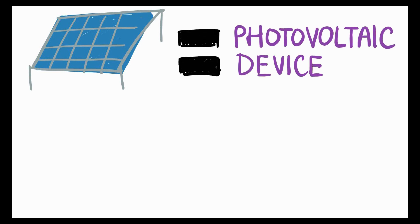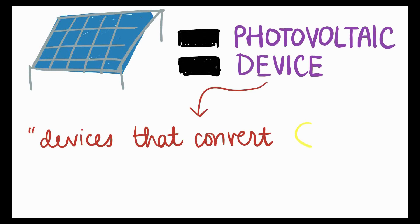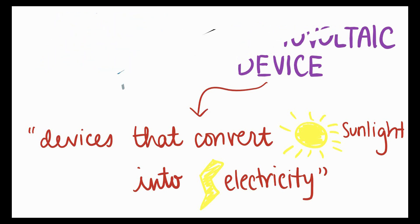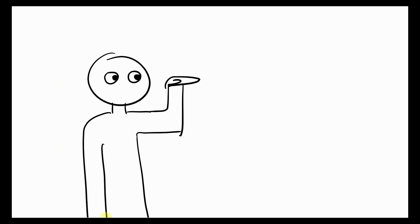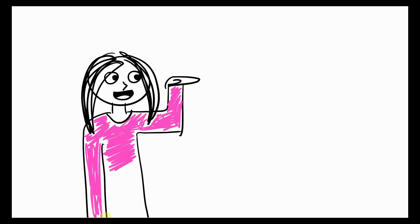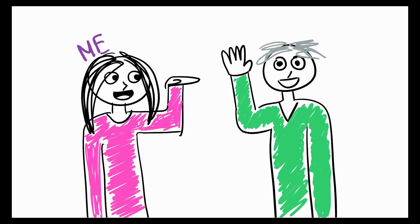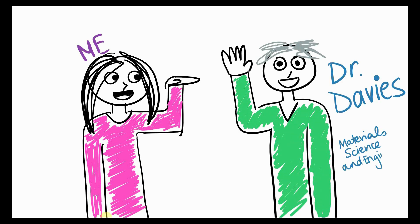Photovoltaic devices are defined as those devices that convert sunlight into electricity. Devices that convert sunlight into electricity are pretty cool, but have you ever considered how exactly they convert that sunlight into electricity? Well, today we're going to explain exactly how photovoltaics work. And here to help me is Dr. Davies. Hello there, Sona.